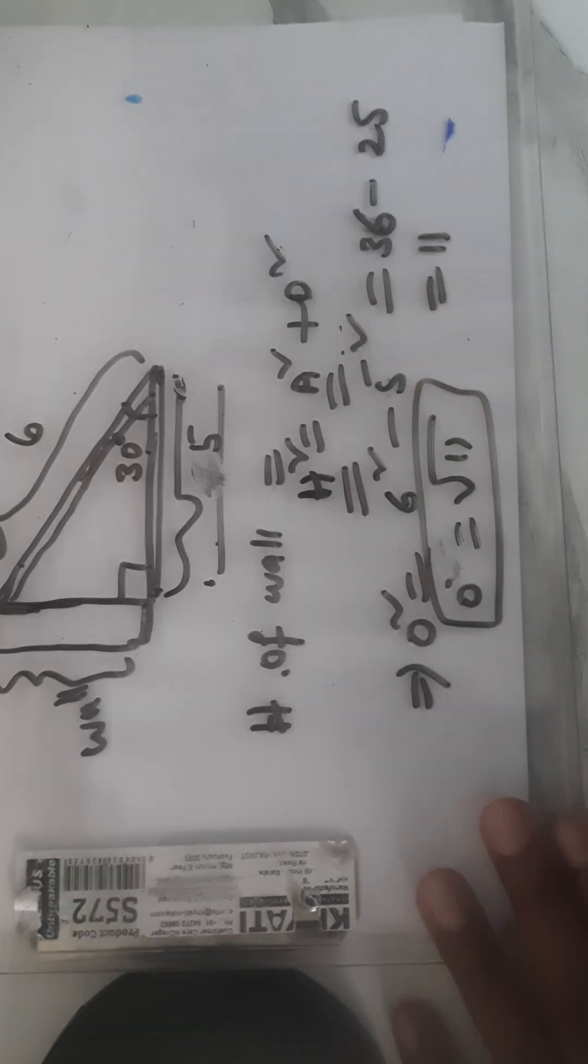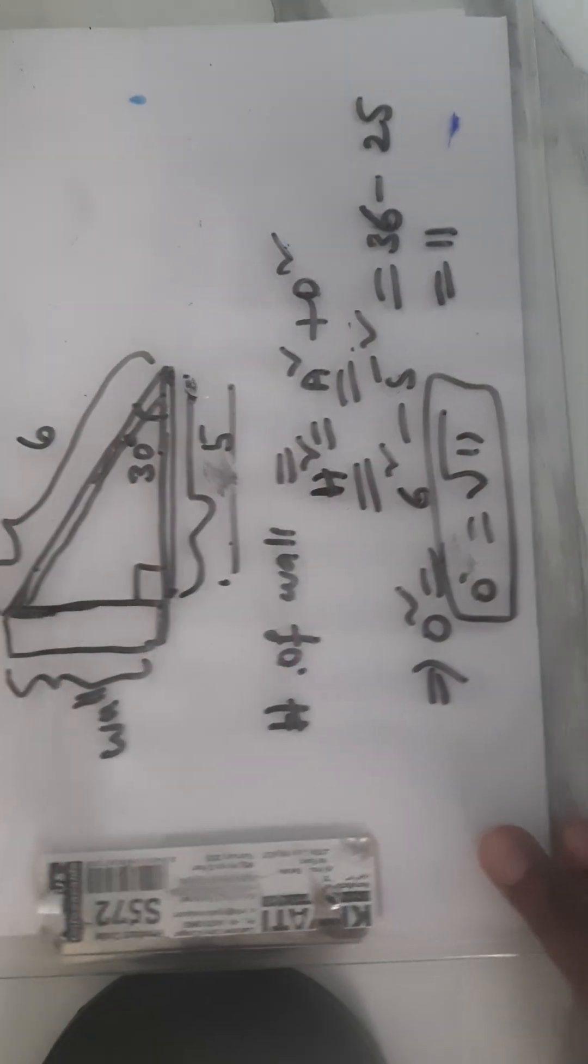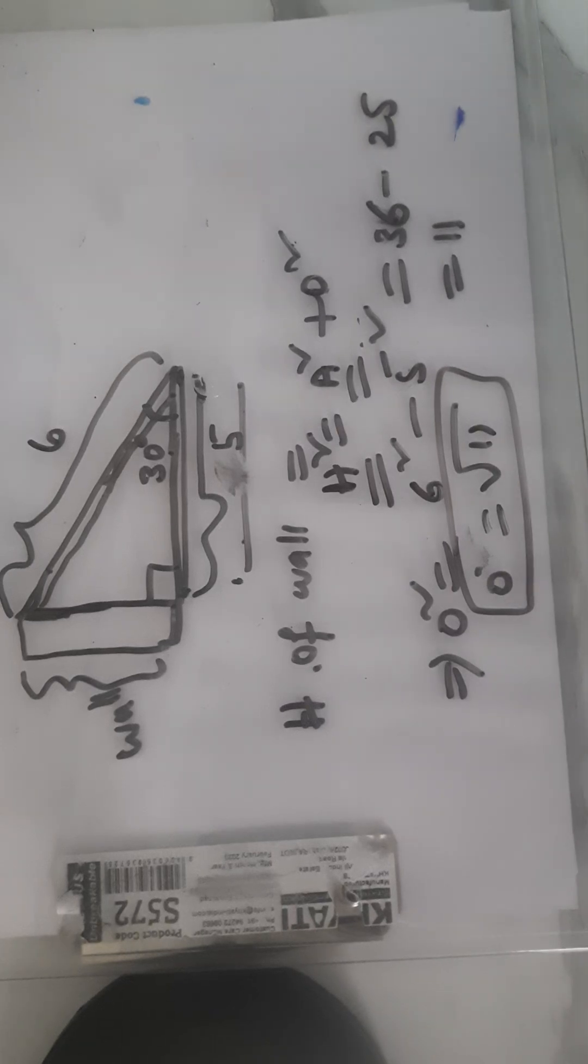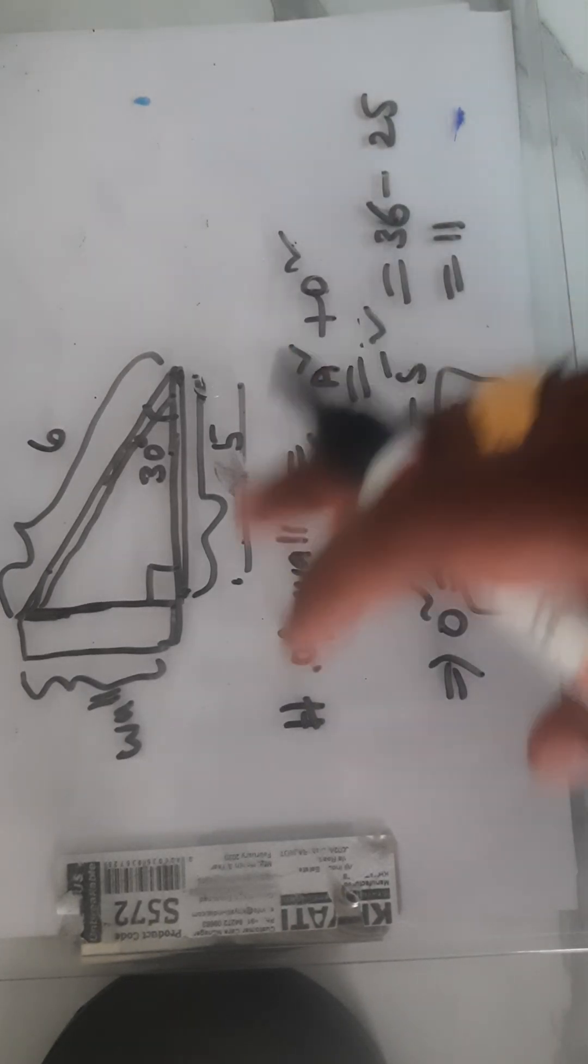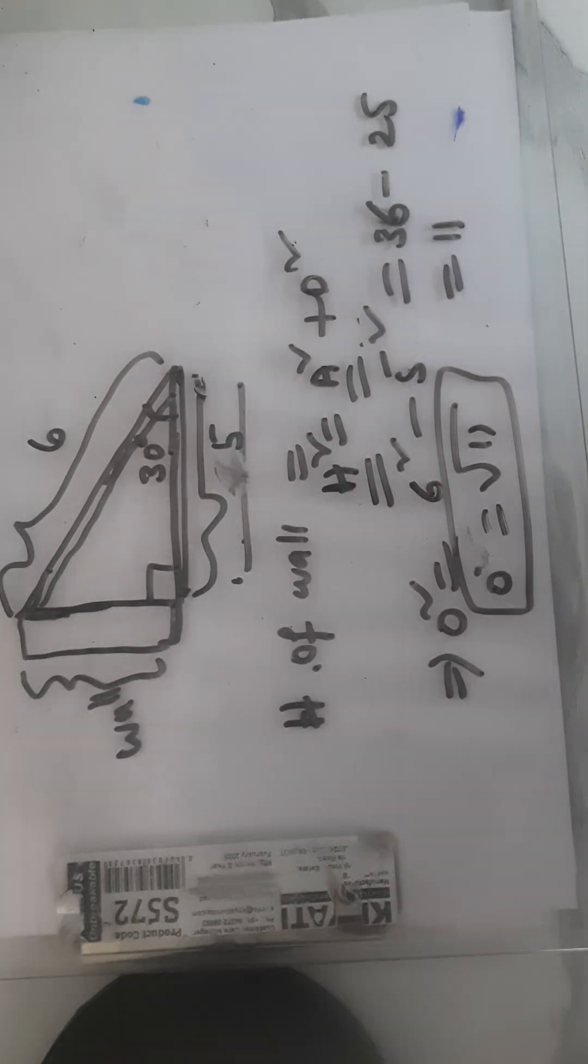This is how we can find the measurement of wall. I think nowhere you will find why we exactly need trigonometry. This is how and this is what is the use of trigonometry.